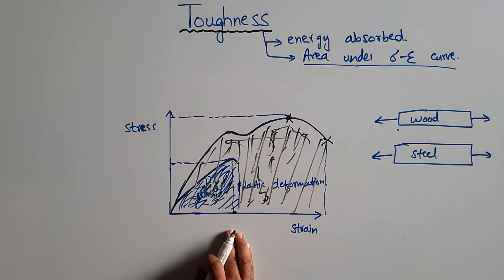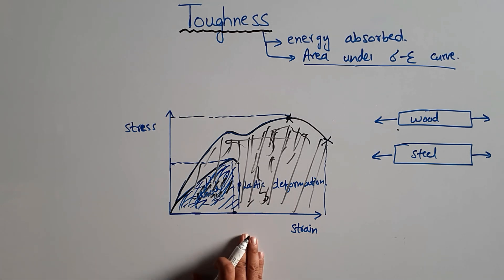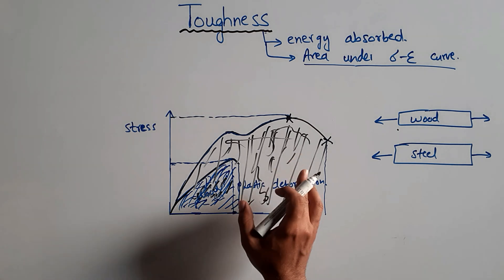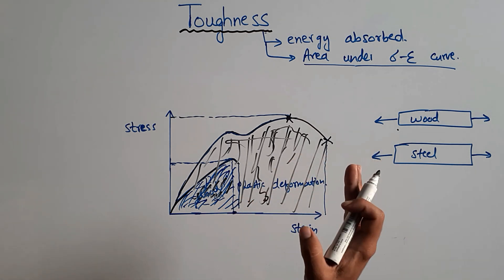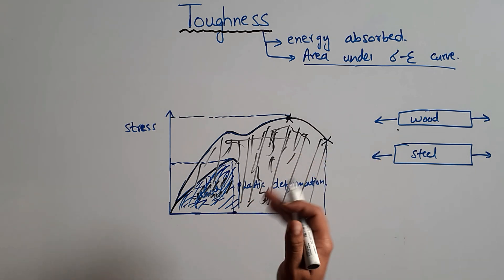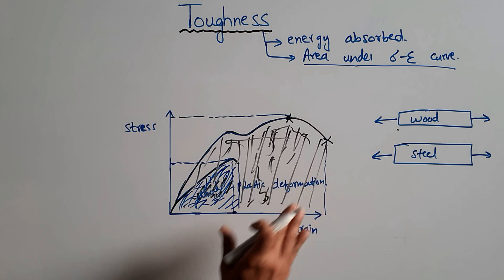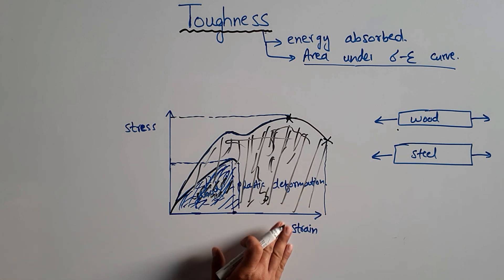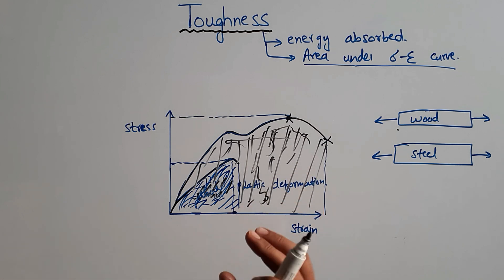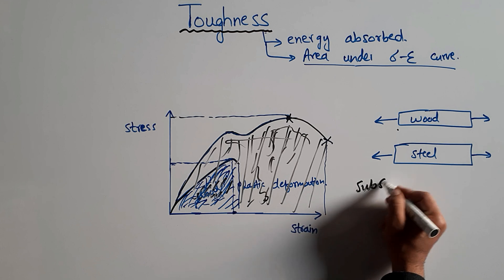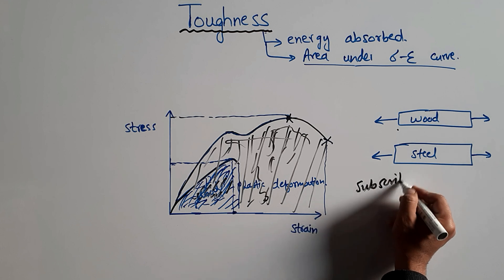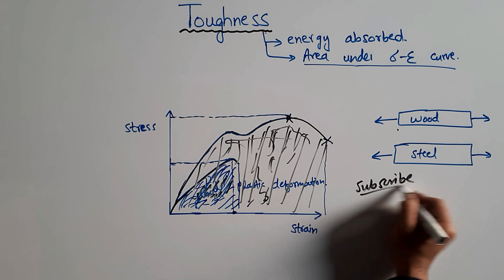This was all about the toughness of a material. Hope you guys understand — toughness is basically the energy absorption of a material, or equivalently, the area under the stress-strain curve. Hope you understand, and don't forget to subscribe to our channel. Thank you for watching.